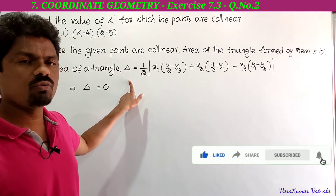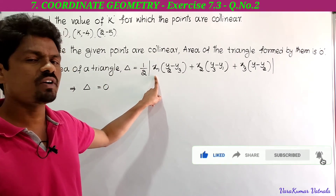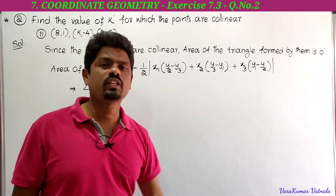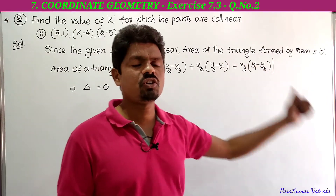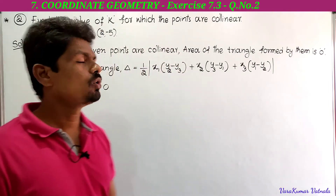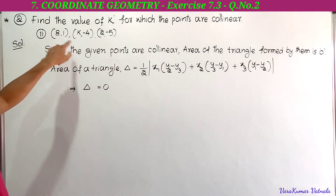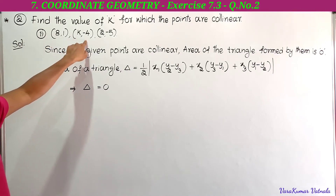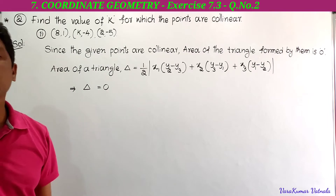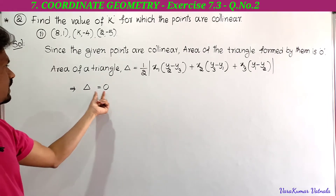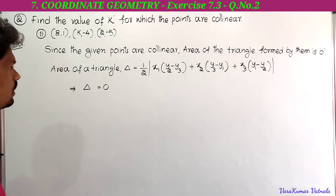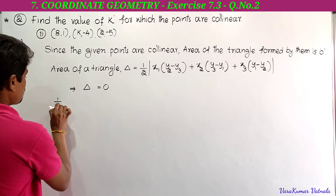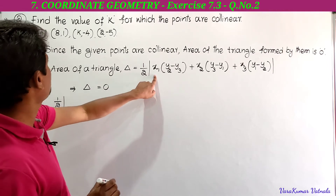The area of triangle delta equals half into modulus of x1(y2 - y3) + x2(y3 - y1) + x3(y1 - y2). We just have to substitute the values in the formula. This is x1 y1, this is x2 y2, this is x3 y3. Area of the triangle is equal to 0. Now substitute: half into modulus of x1, where x1 is 8.